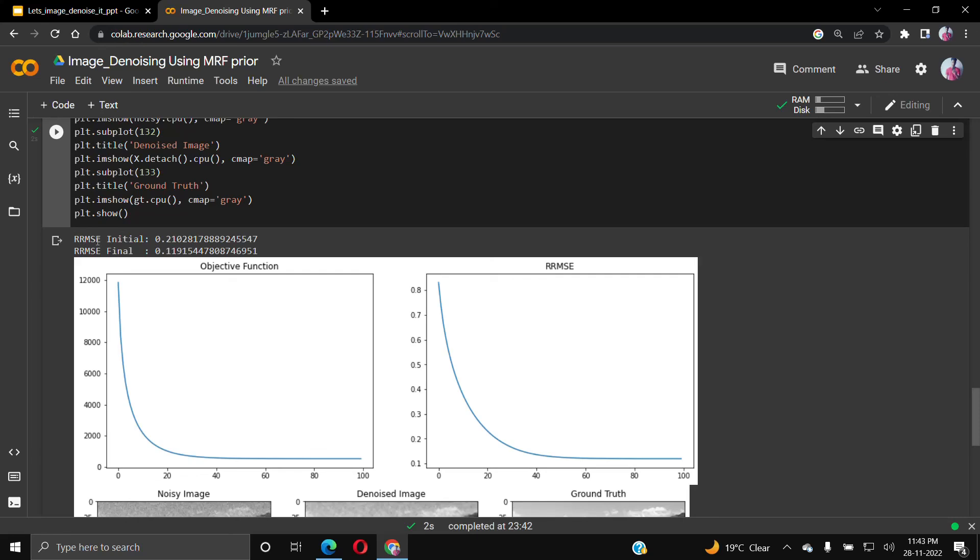Here are our values: the relative root mean square error initially between the ground truth and the noisy image, we get 0.21.